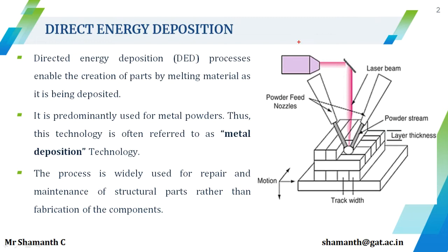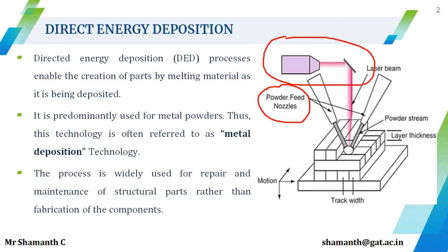Generally, the equipment consists of a deposition head which is an integration of the energy source and powder feed nozzles. Through the nozzles, either metal powders or a thin wire can be fed — both are possible in direct energy deposition. The part being fabricated or repaired is kept on a platform. In some cases, inert gas tubing and sensors may also be present to sense the heat generated. The deposition head is mounted on a 4 or 5 axis machine which can be moved in 4 or 5 directions.